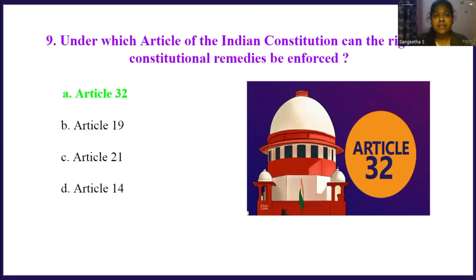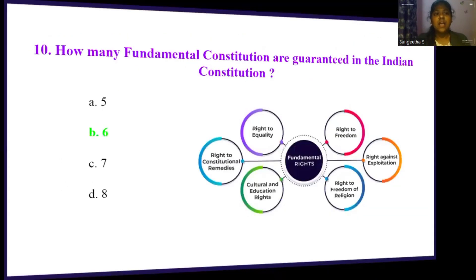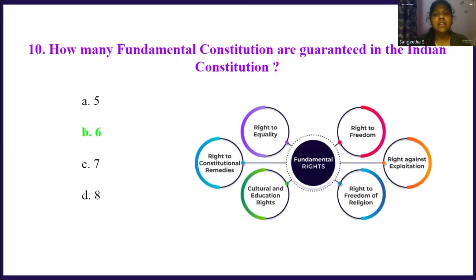How many fundamental rights are guaranteed in the Indian constitution? Option A, 5. Option B, 6. Option C, 7. Option D, 8. The right answer is option B, 6. There are totally six fundamental rights: right to equality, right to constitutional remedies, cultural and educational rights, right to freedom of religion, right against exploitation, and right to freedom.